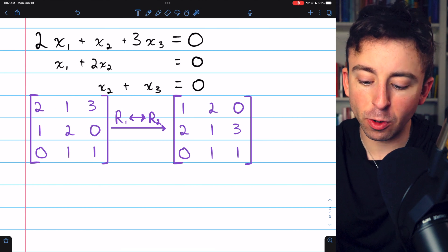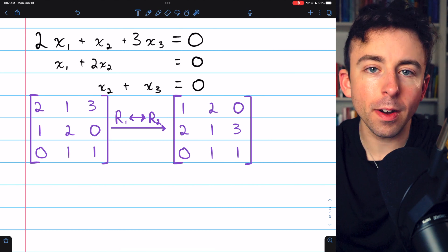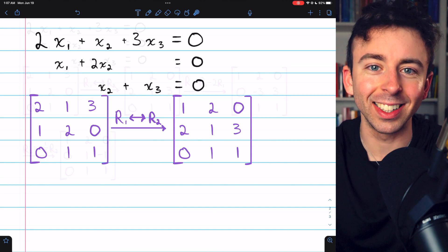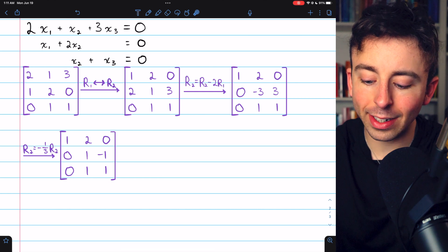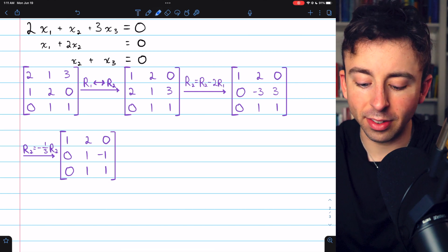My first step is going to be swapping rows 1 and rows 2. That way, I get a leading entry of 1 at the top. We could have also multiplied row 1 by a half, but I'm trying to avoid fractions to keep our solution nice and clean. Swapping rows 1 and 2 gets us here, at which point we can subtract two copies of row 1 from row 2,